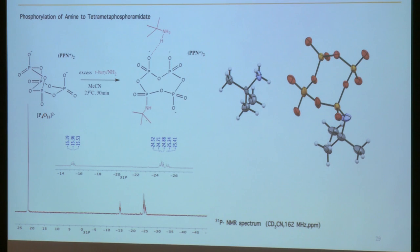Also, if we treat it with tertiary butyl amine with tetramethaphosphate yielding tetramethaphosphate amidate, the solid structure shows the phosphorus bonding with nitrogen assigned in phosphorus NMR at minus 15 and multiplied for other three phosphorus.